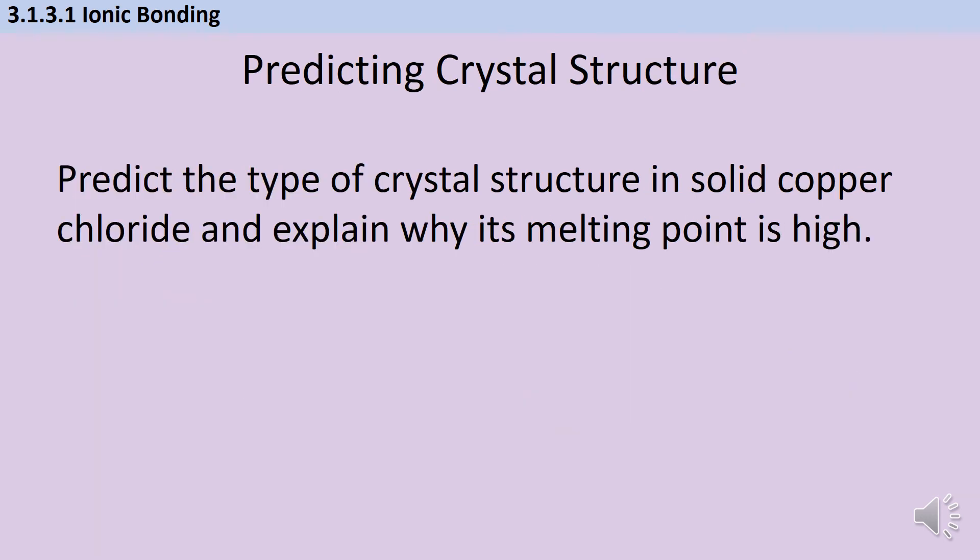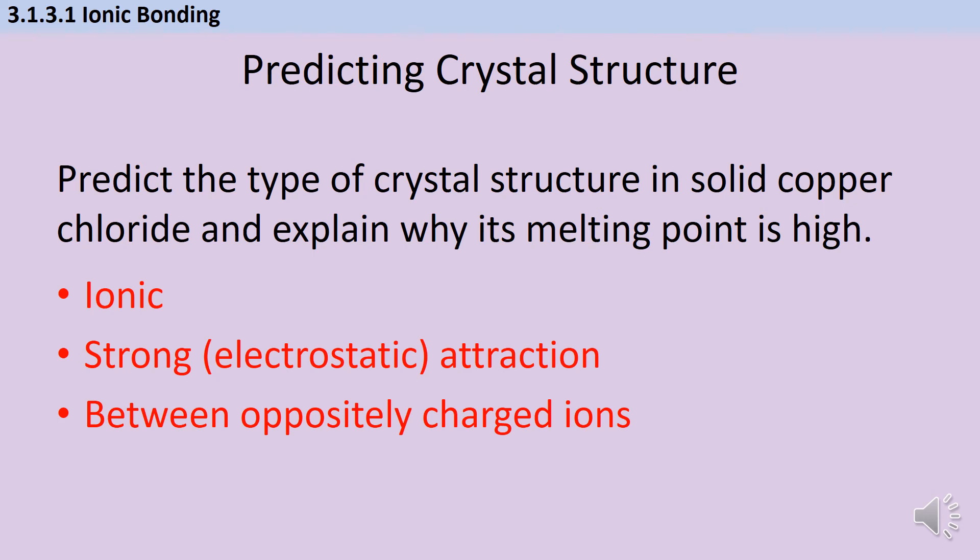One thing different at A-level compared to GCSE is that sometimes you're asked to predict the crystal structure. I see students panicking the first time they see this, but it's just asking what kind of substance is this, what properties will it have. The question is predict the type of crystal structure in solid copper chloride and explain why its melting point is high. Well, its crystal structure is just ionic, a giant ionic lattice. That's all the question's asking. It's the same thing you did at GCSE, just phrased slightly differently. It has a high melting point because it has strong electrostatic attraction between oppositely charged ions.